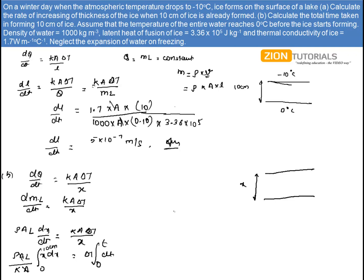So substituting the value and solving the integration, I have value of rho as 1000, value of capital L is 3.36 into 10 to the power 5 divided by K, that is 1.7 into delta T, that is 10.